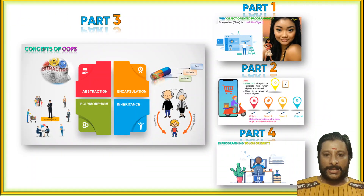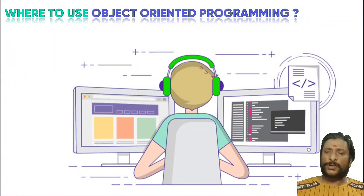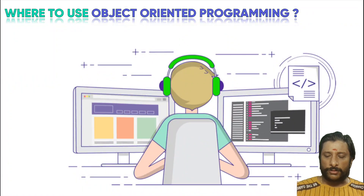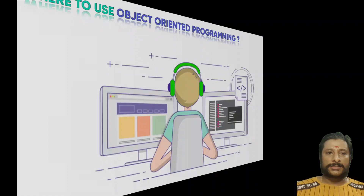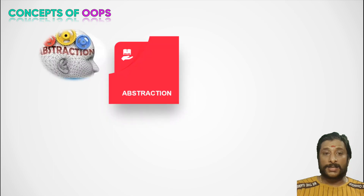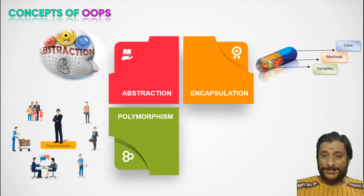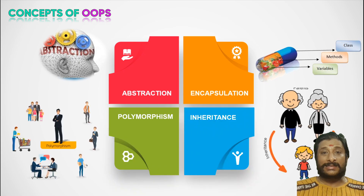Now, where do we use object-oriented programming? There are four key areas. The concepts of object-oriented programming are: abstraction, encapsulation, inheritance, and polymorphism.